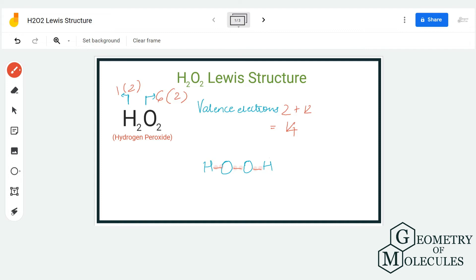You can see here the octets for hydrogen atoms are now complete because they have two valence electrons in their outer shell. The rest of the electrons will be arranged around oxygen atoms to check if it helps in completing their octets.